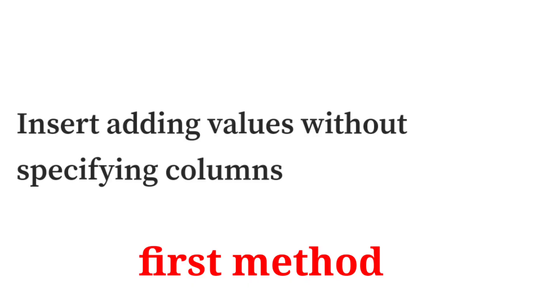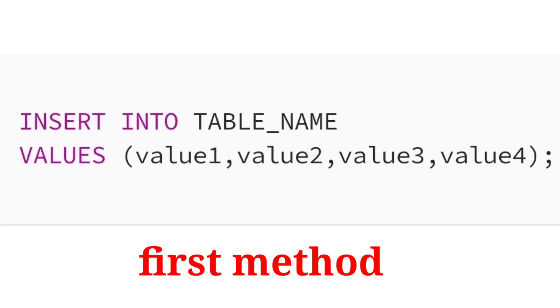First up is insert. Insert allows you to create a record inside of a table. There are two ways to write an insert statement. The first is to insert adding values without specifying any columns. If you're going to add values for every column in a table, you simply follow the example here. You don't need to specify the columns in your statement. It is very important, though, that you write your values in the correct order as they exist in a table based on the columns.